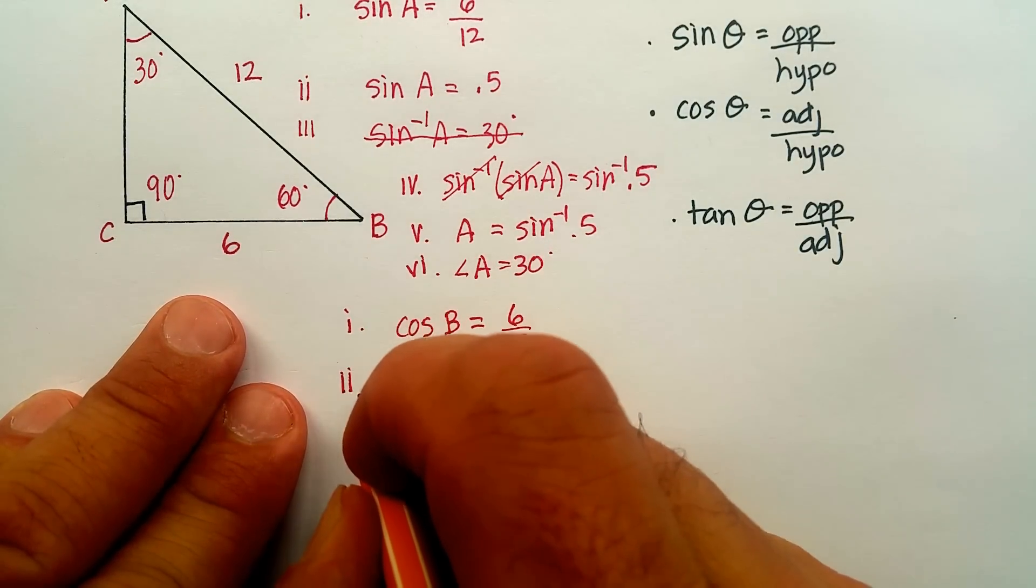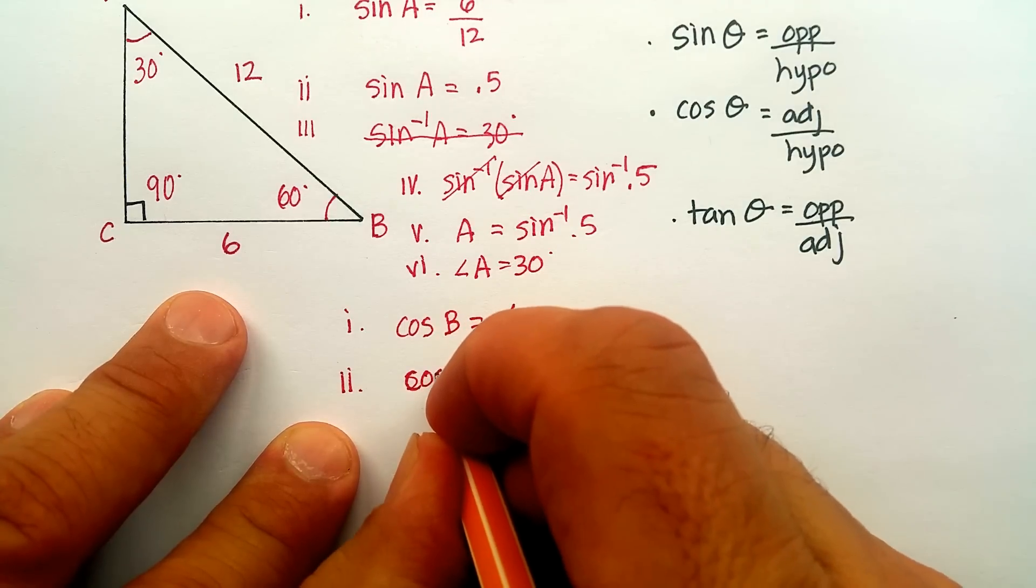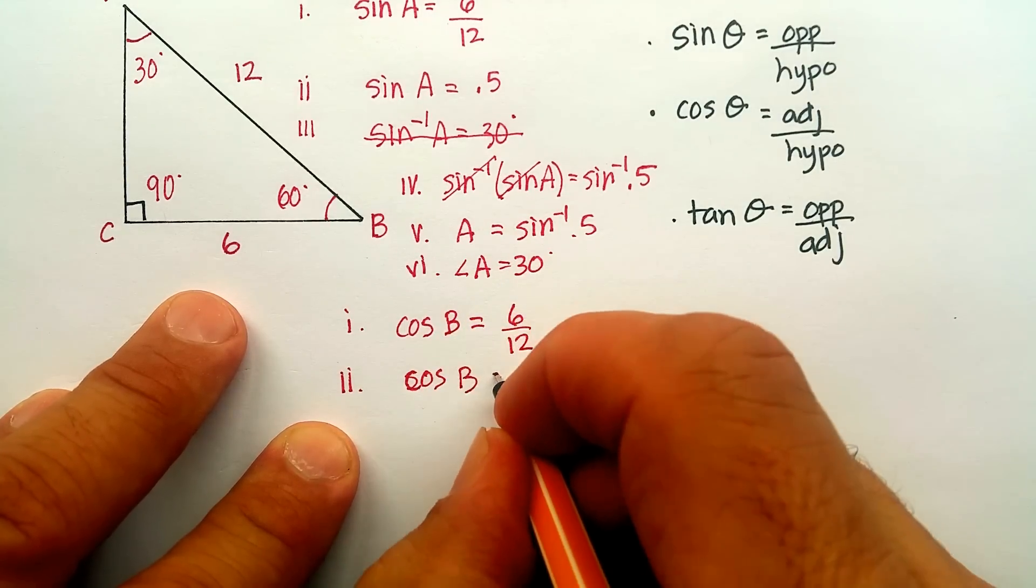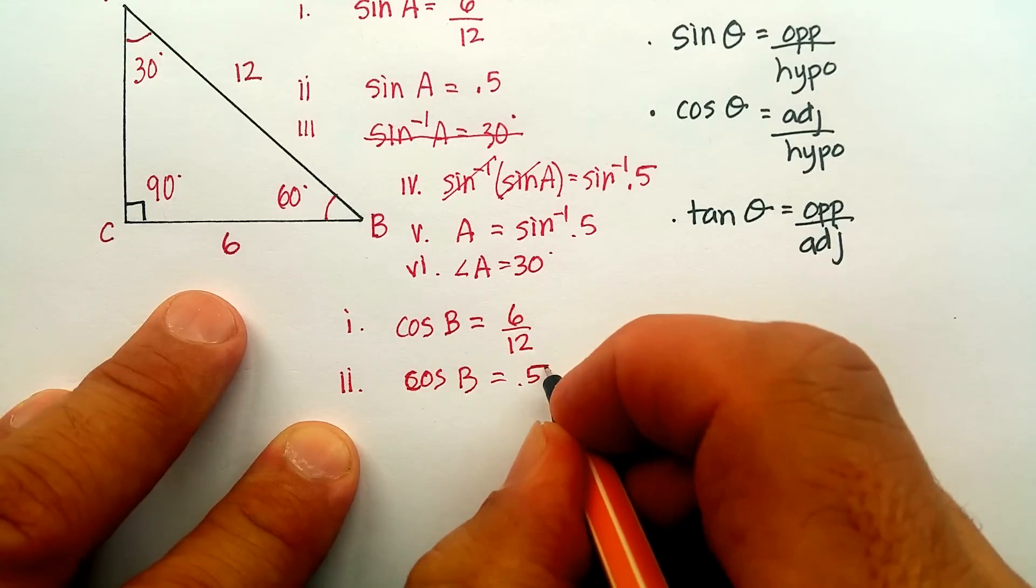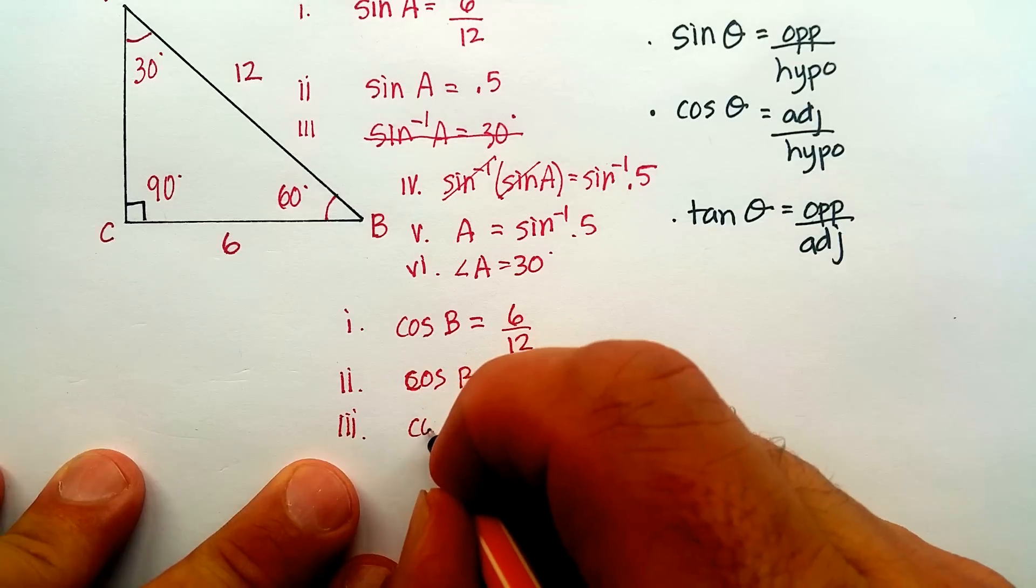Let me just do my algebra. Whoops, that should be cosine. Cosine B is, again, equal to 0.5.